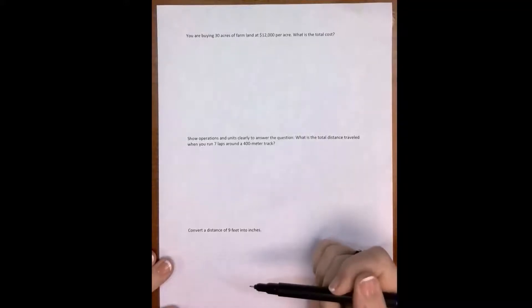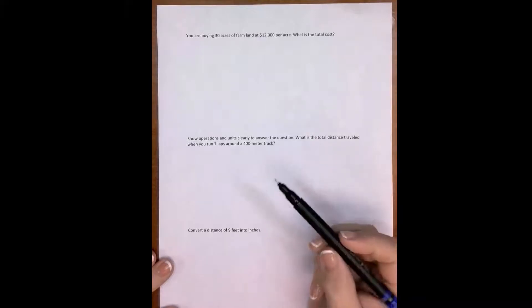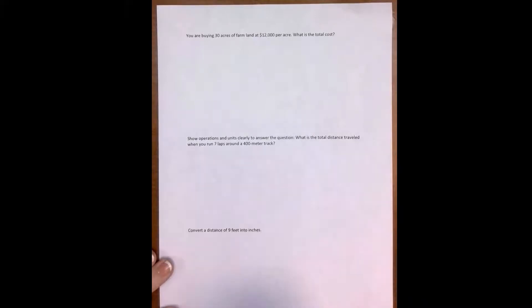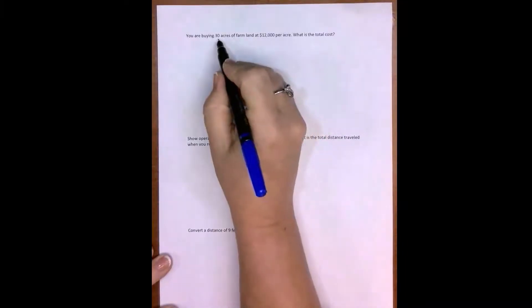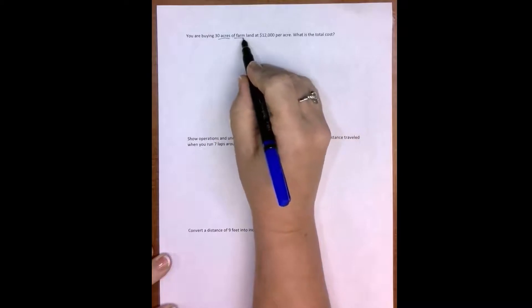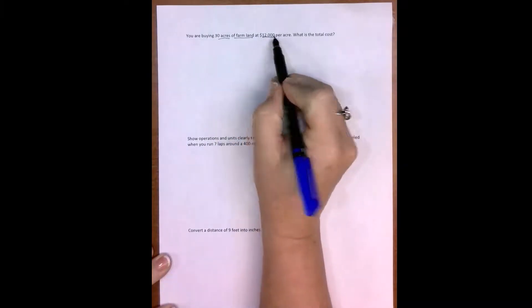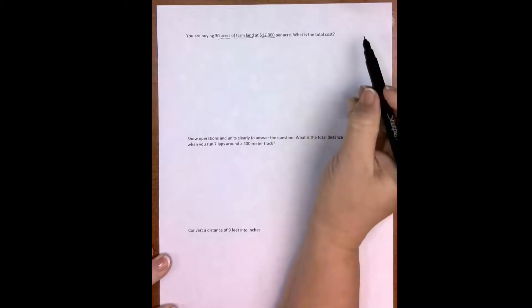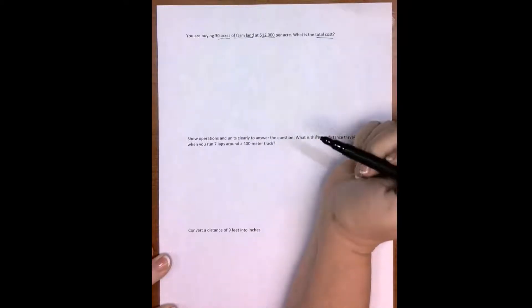So let's do these problems. Remember, we're first taking the time to be sure we understand the problem, then we're going to solve, and then we're going to make sure that our answer makes sense. We're buying 30 acres of farmland at $12,000 per acre, and it wants to know what's the total cost.